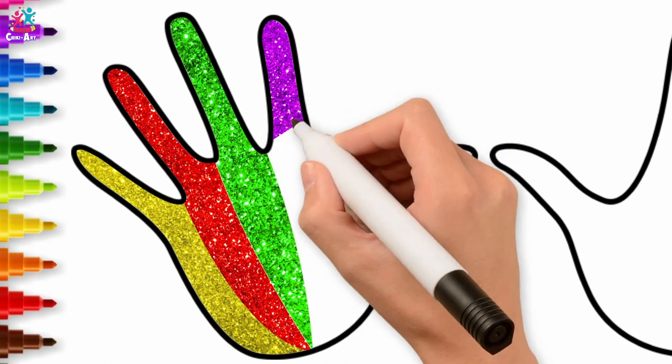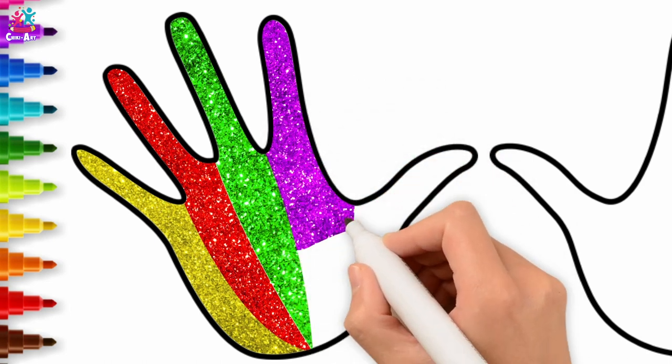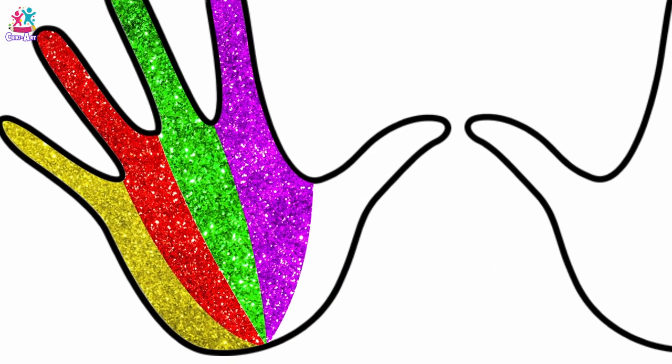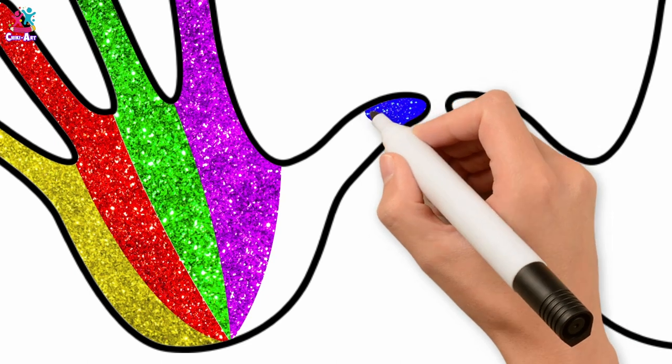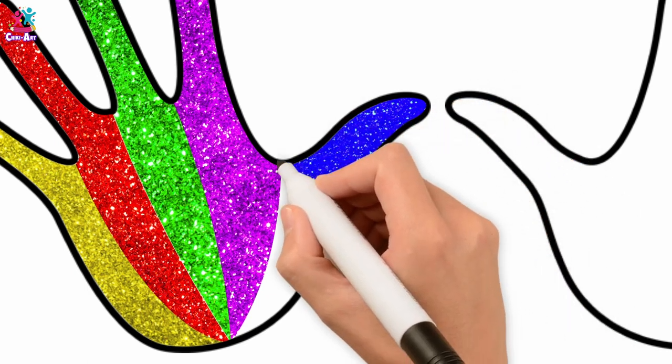Now what's left? It's the thumb. Let's go for nice royal blue for our very important thumb. Well, we couldn't do much on a phone without it, could we?